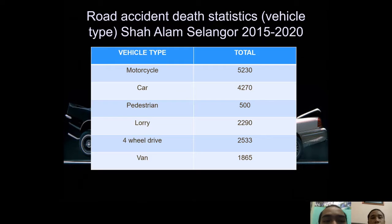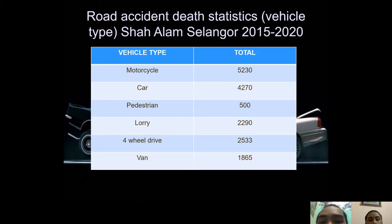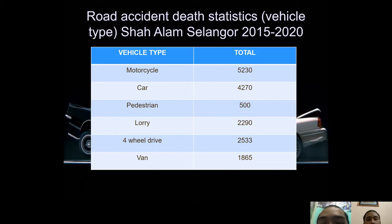The second graph shows statistical data on the number of vehicle types often involved in road accidents in Shah Alam, Selangor. First, motorcycle with a total of 5,230; second, car with a total of 4,270; third, pedestrian with a total of 500; fourth, lorry with a total of 2,290; fifth, four-wheel drive with a total of 2,533; and lastly, vans with a total of 1,865.